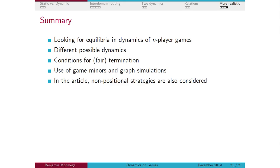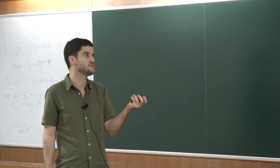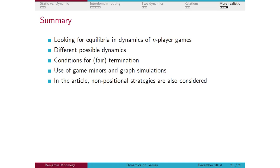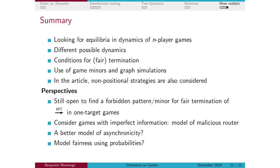To summarize: this is a first article studying dynamics in graph games. In order to look for equilibria such as Nash equilibria, we have studied different possible dynamics. We have found conditions to prove termination and fair termination using game minors — checking for patterns inside the game — and graph simulations as the main technical tool.